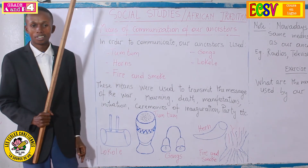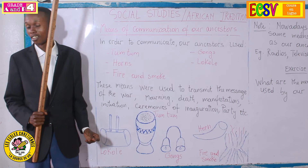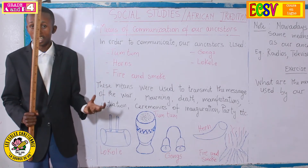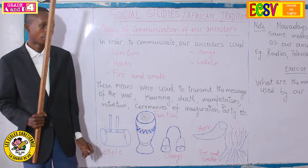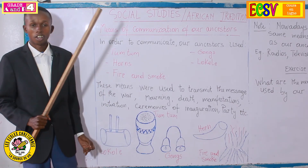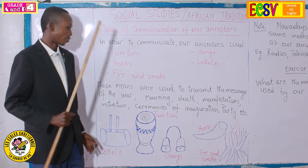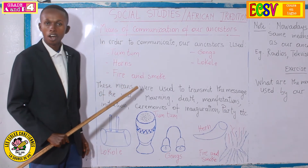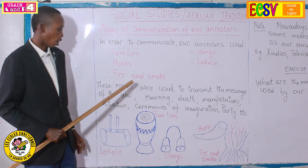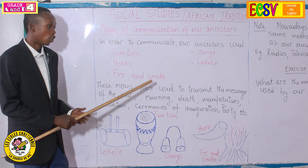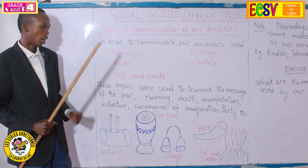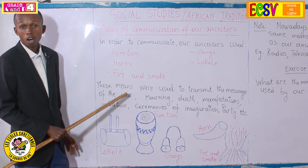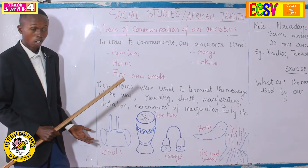Also guns. Guns ring. If you see guns, you will see that they ring. Also, locally. So these means were used to transmit the message, as I have said, of the wall. Not just at random.